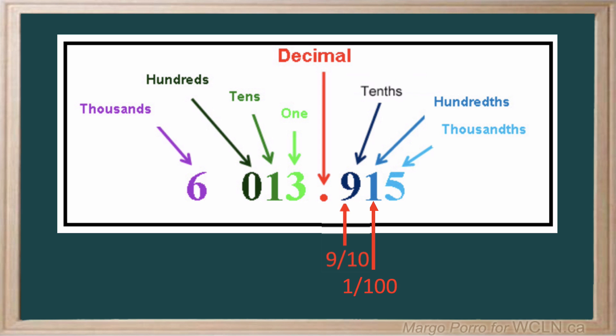A number in the third place after the decimal represents thousandths. The five represents five thousandths.